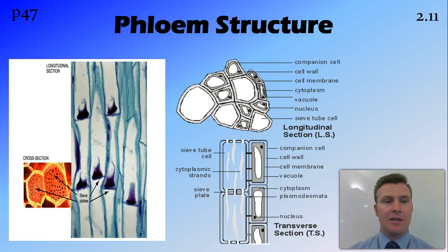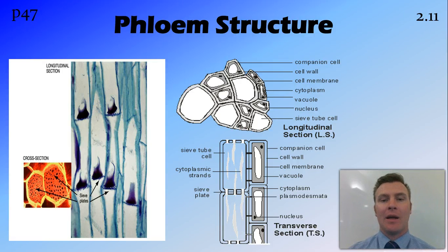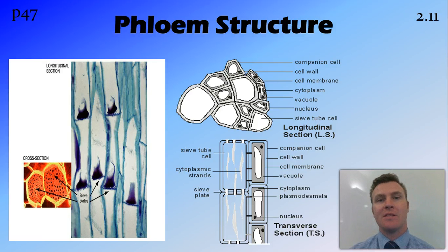Here we can see the elongated sieve cells and the sieve plates between them, with micropores on those plates allowing the movement of nutrients from one sieve cell to another.